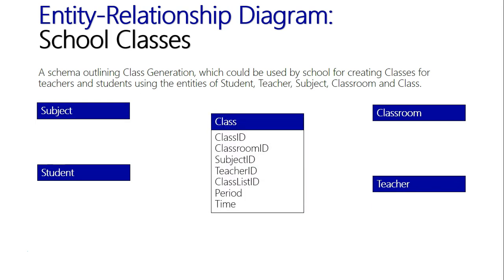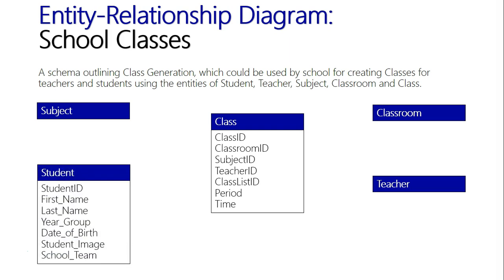The class is what we're trying to generate — a class for a specific subject with about 20 students in it — and we pull all that data from the other entities. The first thing that needs to go into this class is students: student ID, first name, last name, what year group they're in, date of birth, an image of the student from the school database, and if the school uses a house color team.